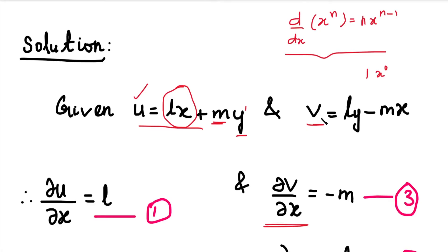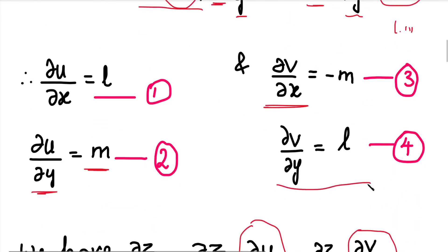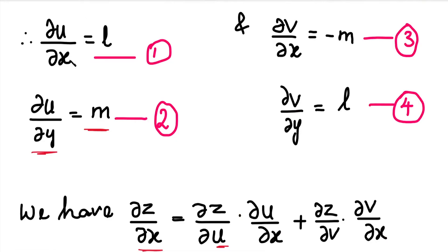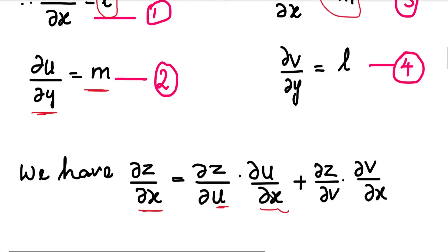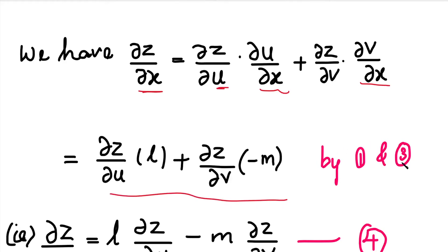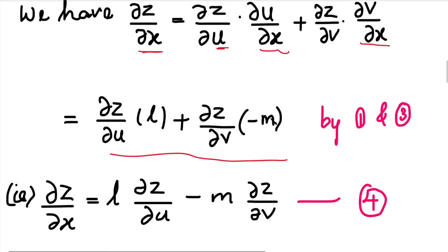Now differentiating v with respect to y: y is the variable, x is constant. The second term (minus mx) is constant so its differential value is 0. In the first term, l times y: l is constant, y is variable, so l times 1 equals l. So ∂v/∂y equals l. Thus equation 1: ∂u/∂x equals l; equation 2: ∂u/∂y equals m; equation 3: ∂v/∂x equals minus m; and ∂v/∂y equals l. We substitute these values.